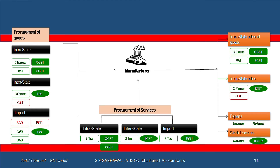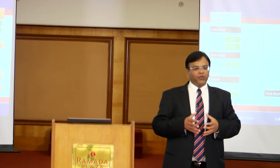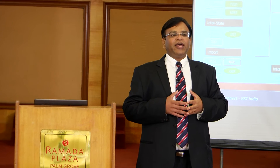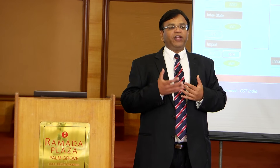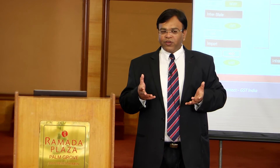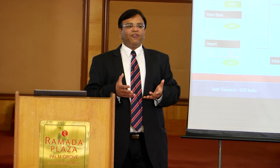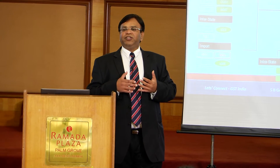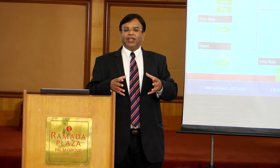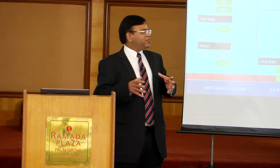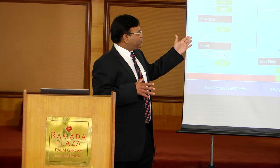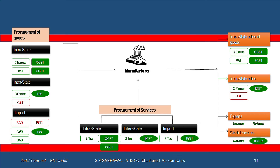Today there's a big surprise which happens at the time of assessment. At the time of sale, customers say they will give you a C-form so you charge 2%. After three years, when assessment happens, C-forms are not available. Because C-forms are not available, you have to pay 12.5%, but the customer is no longer available or not even paying your basic value. So getting the additional 10.5% plus interest and penalties becomes a big nightmare for marketing teams tracking C-forms.